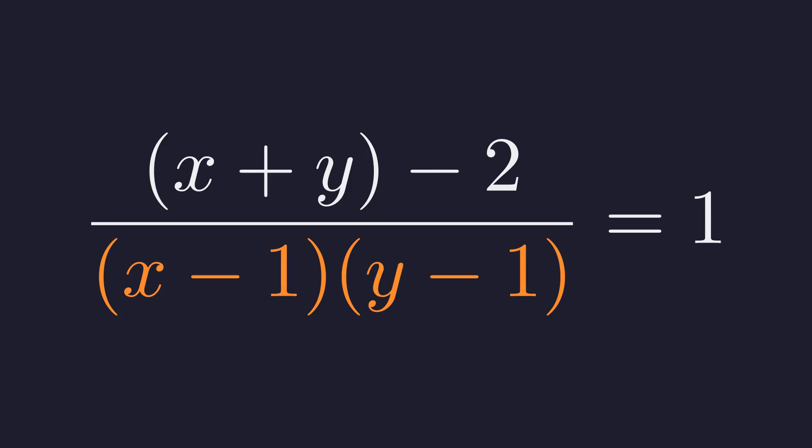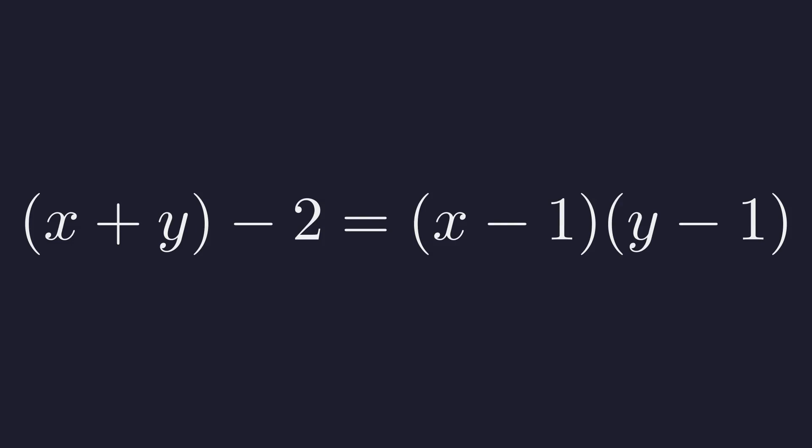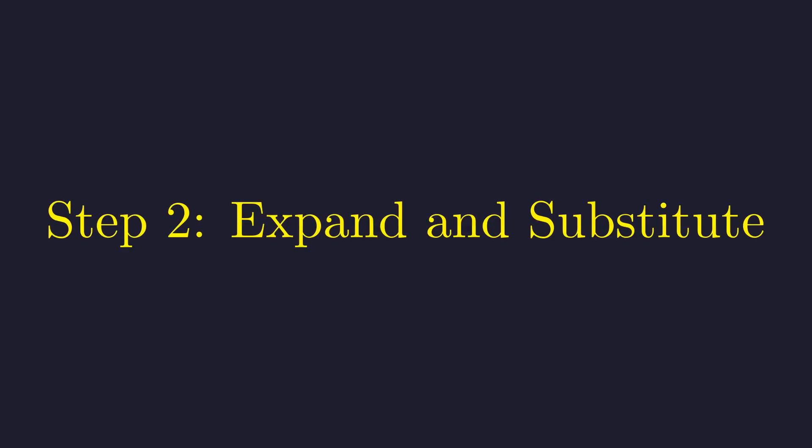To eliminate the fraction, we can multiply both sides of the equation by the denominator. We now have the quantity x plus y minus 2 equals the quantity x minus 1 times the quantity y minus 1.